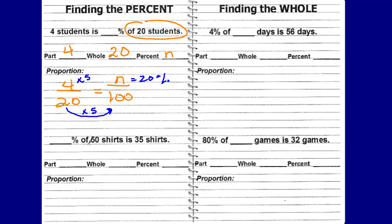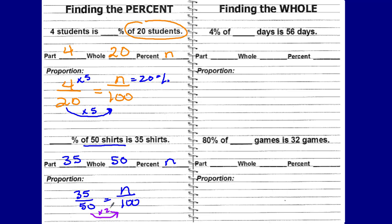Blank percent of 50 shirts is 35 shirts. The 'of 50 shirts' is your whole, and the part is 35 — you're looking for your percent, which is the unknown. Set up your proportion: part to whole, 35 out of 50, is equal to n out of 100. Use your scale factor — can you go from 50 to 100? Yes, multiply by two. Do the same thing to the 35: 35 times two is 70. So 70% of the 50 shirts is 35.